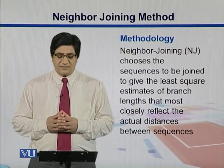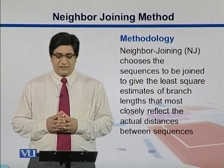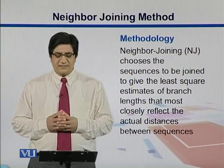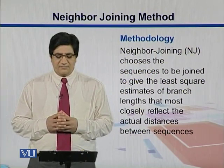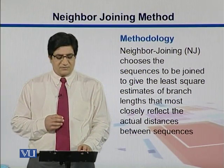NJ chooses the sequences to be joined to give the least square estimates of the branch lengths that most closely reflect the actual distances between those sequences.